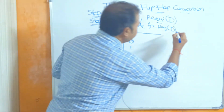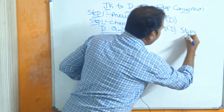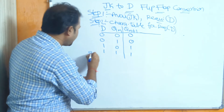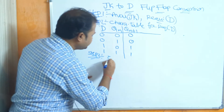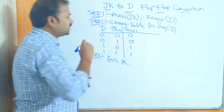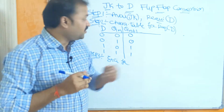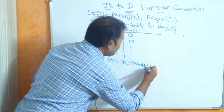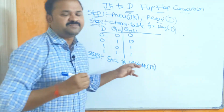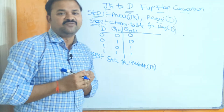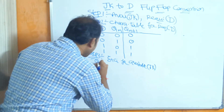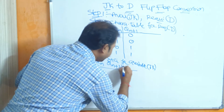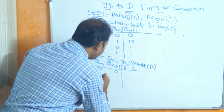Step 3 is to find the excitation table for the available flip-flop, which is the JK flip-flop. Steps 3 and 4 are based upon the available flip-flop. Here the inputs are Qn and Qn+1, and the outputs are J and K. So totally we will have 4 combinations.